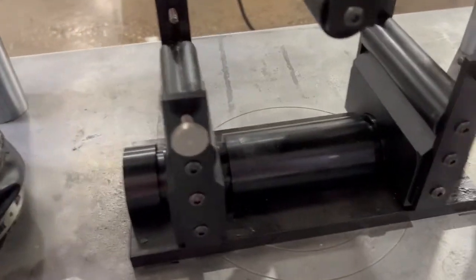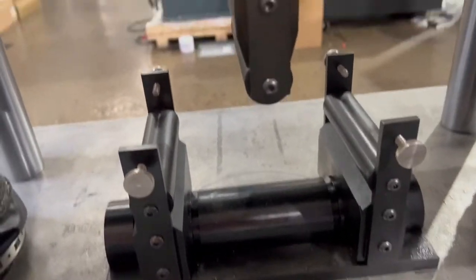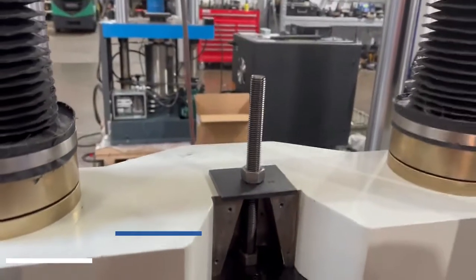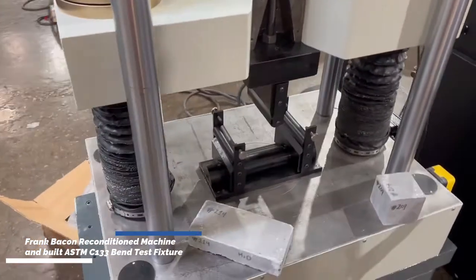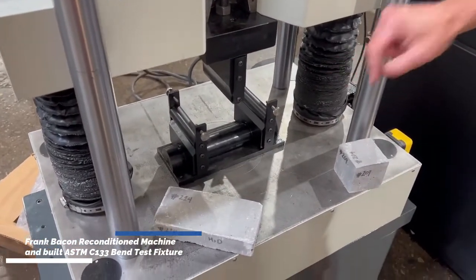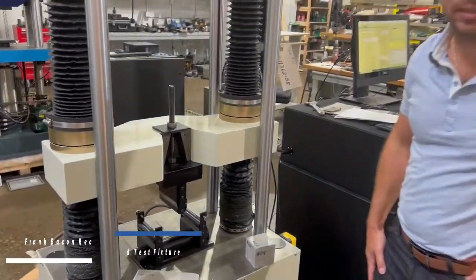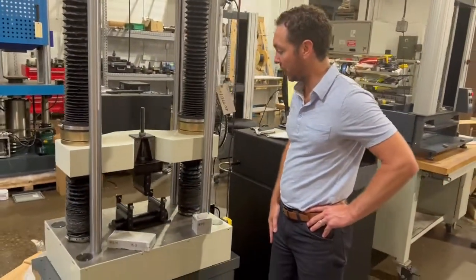This machine was all built, remanufactured, and tooled up by Frank Bacon Machinery. This fixture, the ASTM C133 fixture MOR, was all designed, engineered, and built by us, and we got a world-class test system, best value in the marketplace, and we're going to show you how to do some MOR testing.